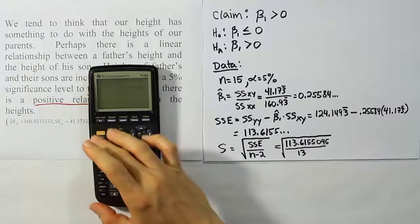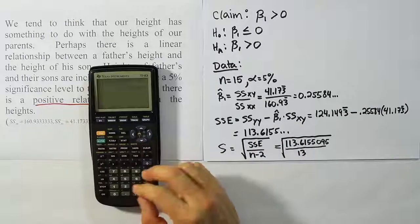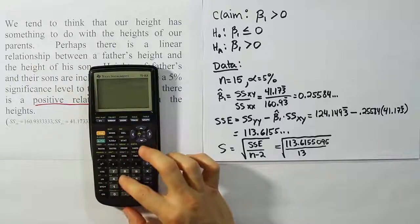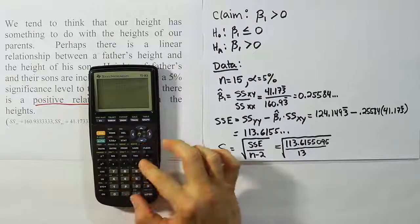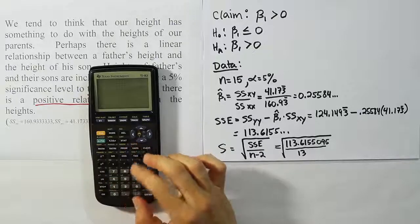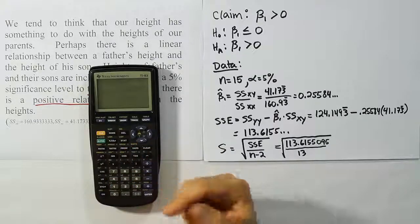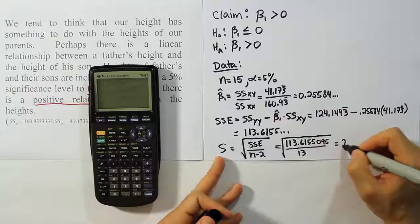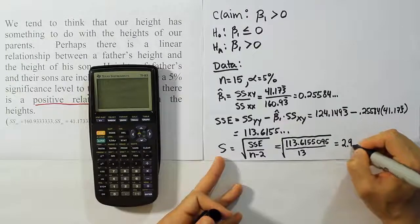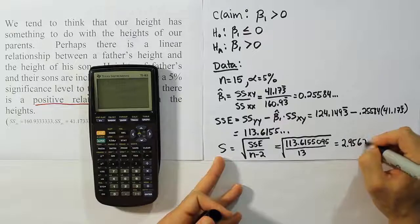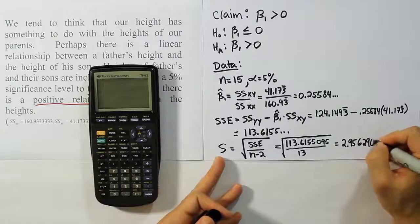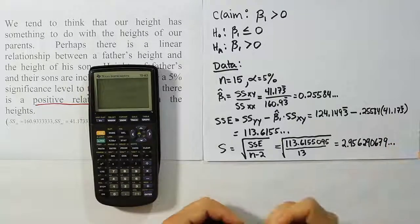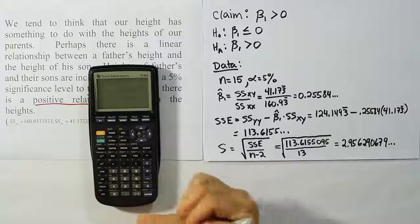Okay, so let's do that in our calculator, the square root of 113.6155095, divided by 13. Close it up, hit enter, and we get 2.956. So we're going to get 2.956290679. Okay, and then on and on and on. So I've given a lot of places for S there, but that's basically it.